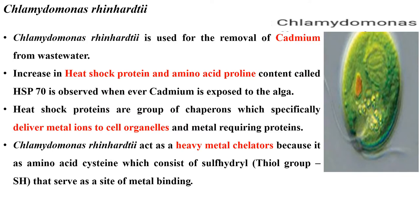Chlamydomonas reinhardtii is used for the removal of cadmium from wastewater. An increase in heat shock protein HSP70 and amino acid proline content is observed whenever cadmium is exposed to the alga. Heat shock proteins are a group of chaperones which specifically deliver metal ions to cell organelles and metal-requiring proteins. In Chlamydomonas, it acts as a heavy metal chelator because it has amino acid cysteine, which consists of a sulfohydryl thiol group that serves as a site of metal binding.